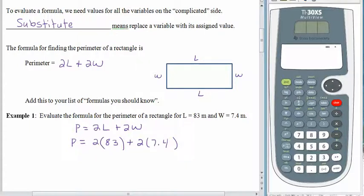And now we're ready to calculate. When we were working with the order of operations we did everything one step at a time just so that we could get really familiar with what the order was. And I said back then that there were some shortcuts that we could take. When we look at this we have 2 times 83 plus 2 times 7.4. We know that multiplications are done before additions. So we can just go through and look at all of our multiplications. 2 times 83 is 166. 2 times 7.4 is 14.8. Now we can add.